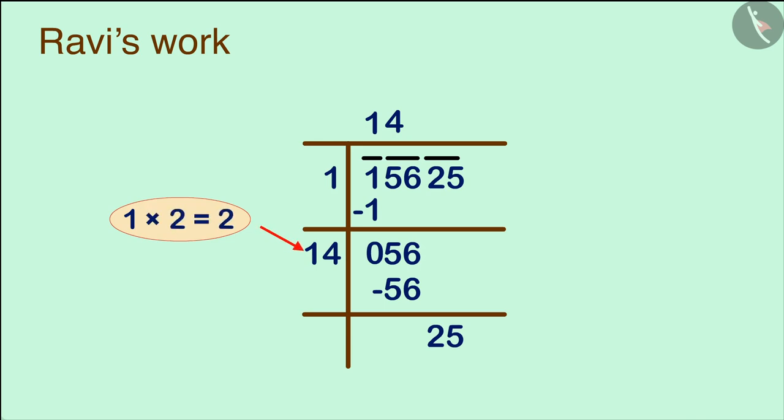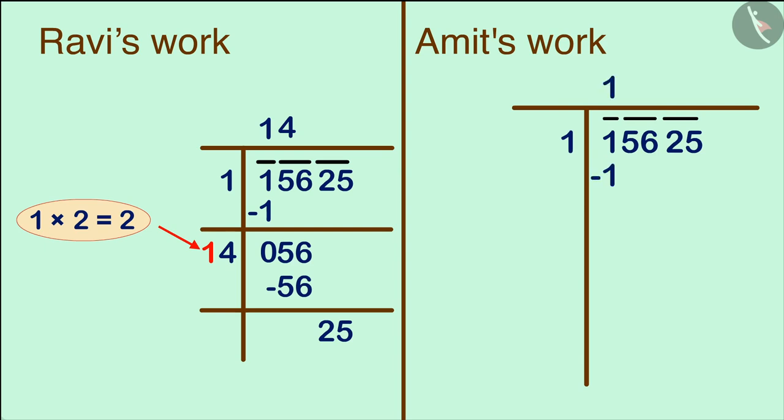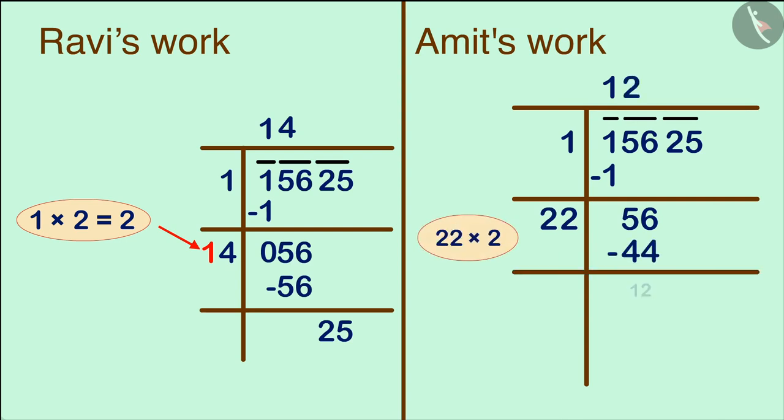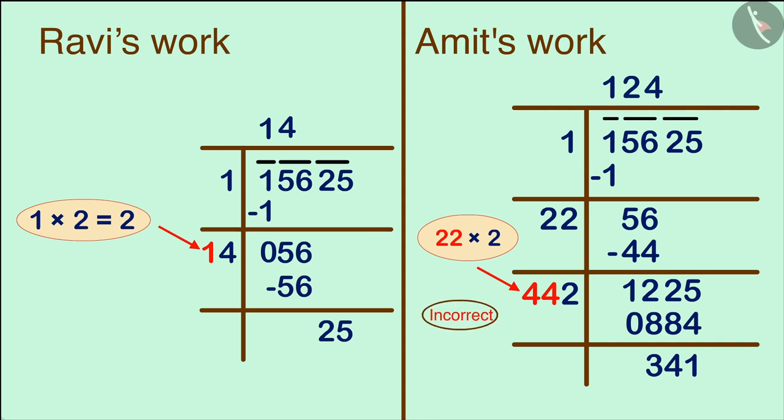Now we will look at Amit's answer. Amit multiplied the whole number of the first divisor by two to make the new divisor, which is incorrect, because we only have to multiply the digit in the units place of the first denominator by two, and not the whole number.